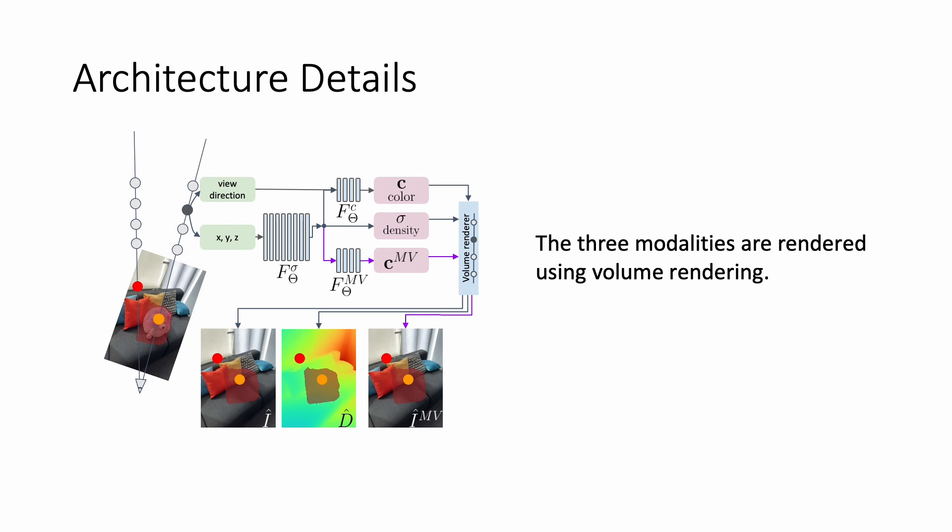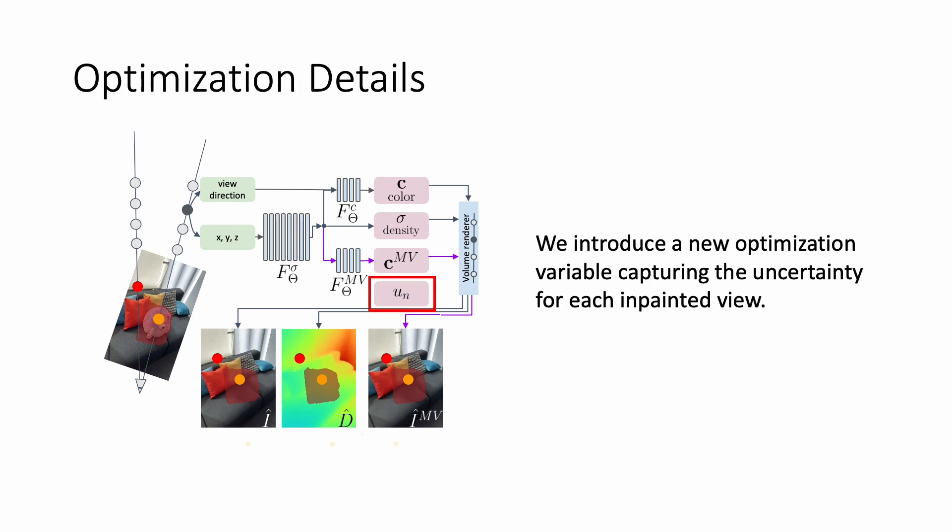Since we now know the underlying architecture of our NeRF, how do we train it to obtain multi-view consistent inpaintings? We introduce a new optimization variable u that is capturing the uncertainty of each inpainted view. These variables are jointly optimized together with all other parts of the pipeline.